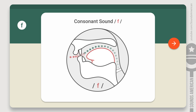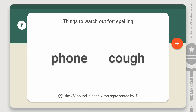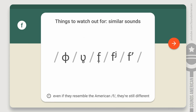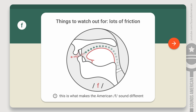Many non-native English speakers are familiar with the F sound and consider it to be easy to pronounce. Indeed, it's not the hardest consonant to make, but there are some things to watch out for. First, this sound is not always represented by the letter F, and this can sometimes be a problem. Second, similar sounds exist in many languages, and some non-native speakers use their native F consonant when they speak English. Third, and most importantly, Americans pronounce their F with lots of friction.